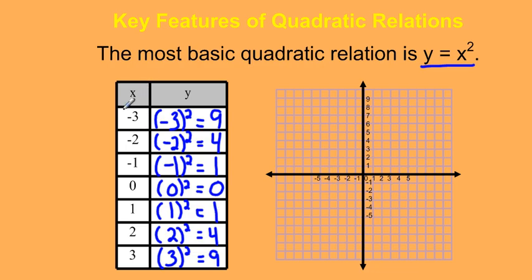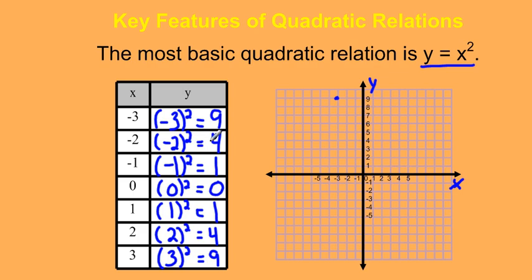Now I want to plot these points using my x-coordinates and corresponding y-coordinates. The horizontal axis is my x, and the vertical axis is the y. To plot the point negative 3, 9, I go over negative 3 on my x and up 9 on my y. To plot negative 2, 4, I go over negative 2 on my x and up 4 on my y.